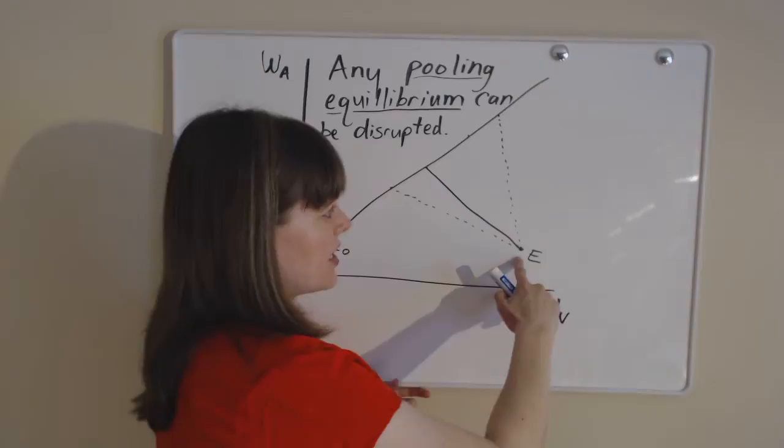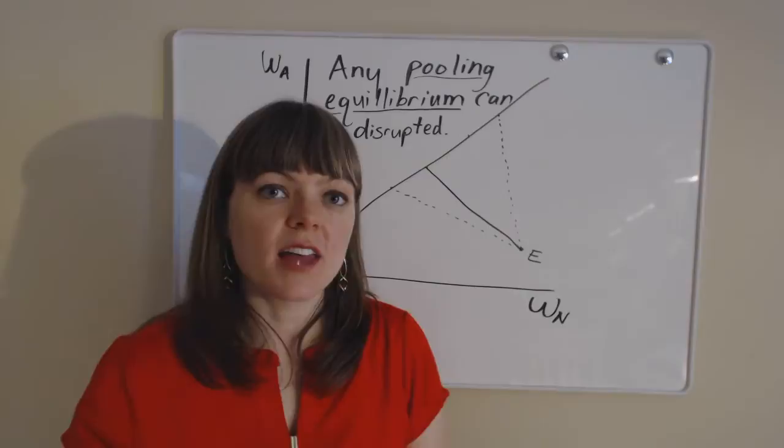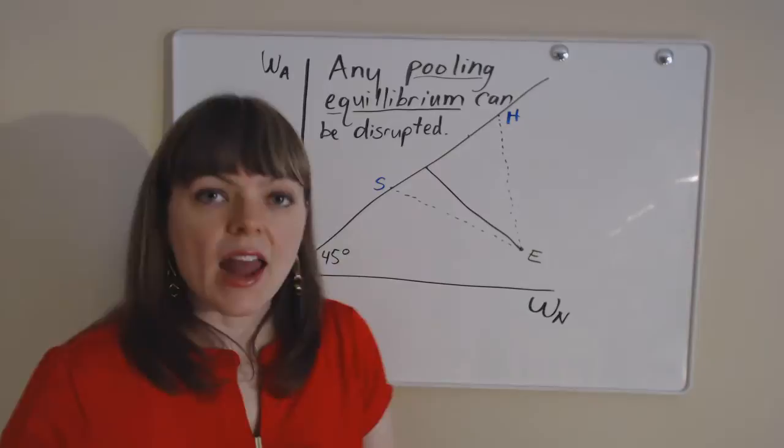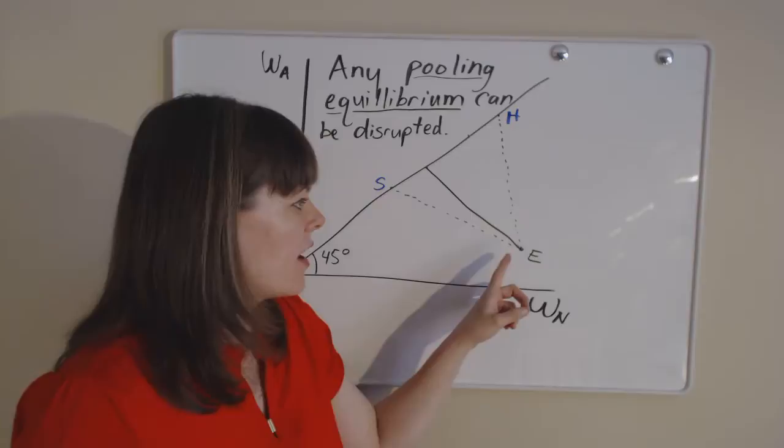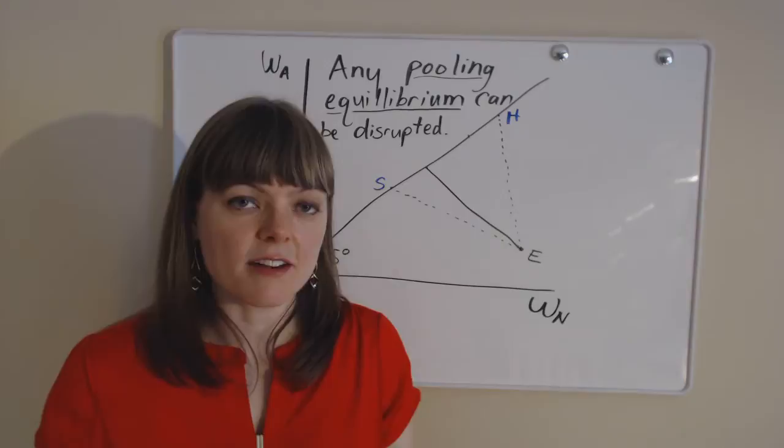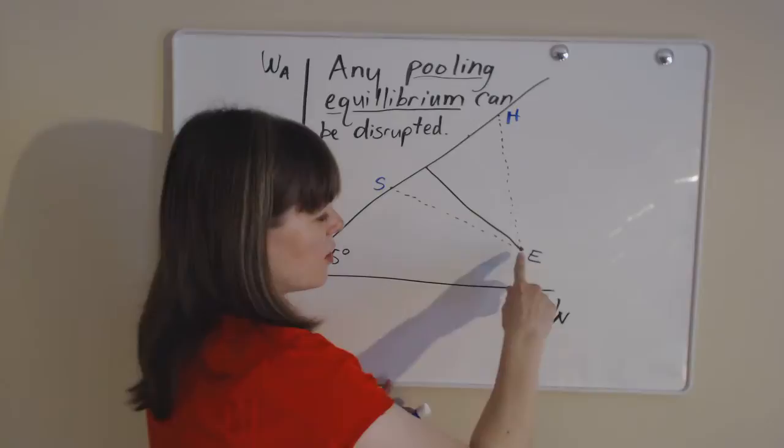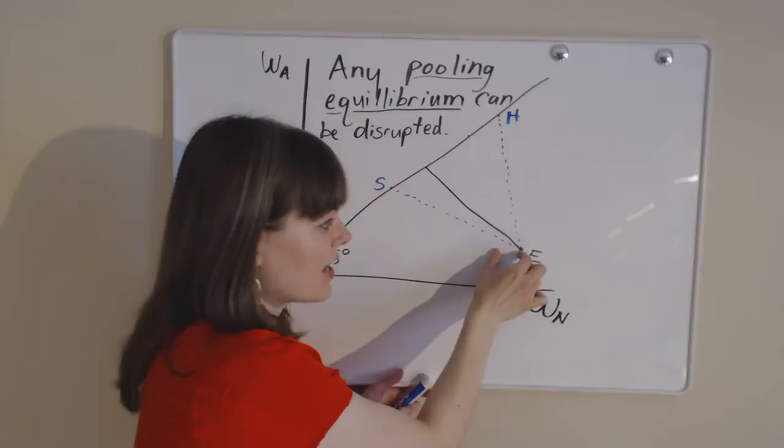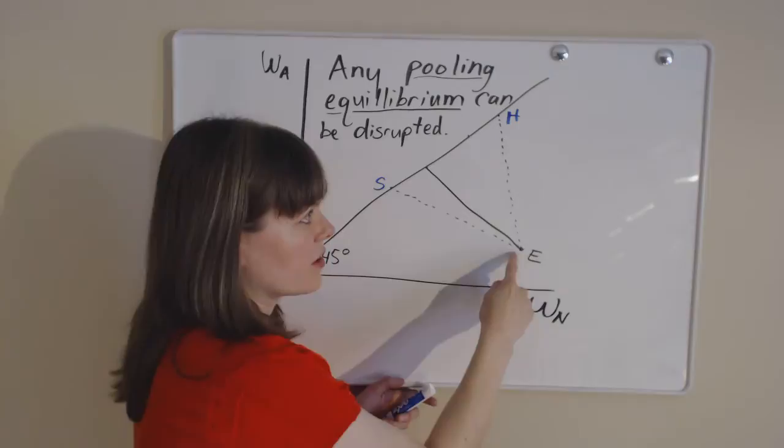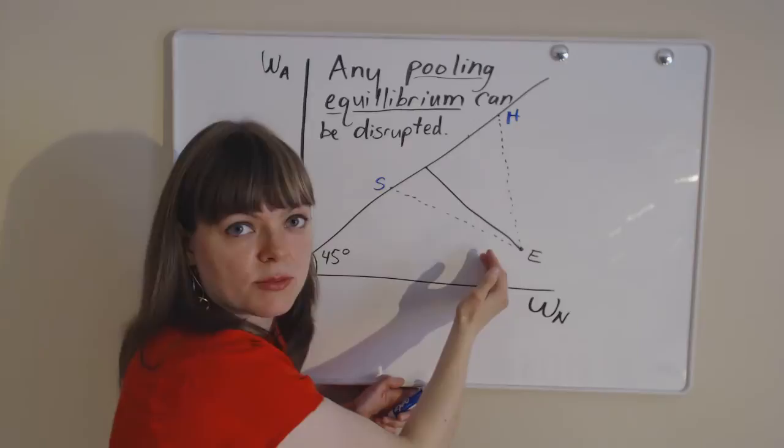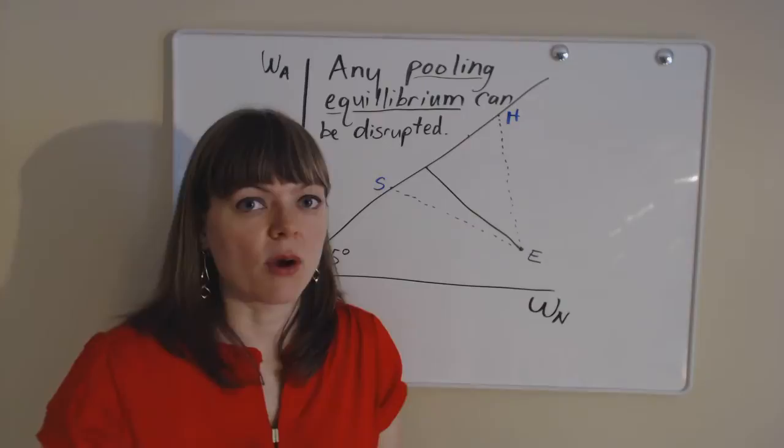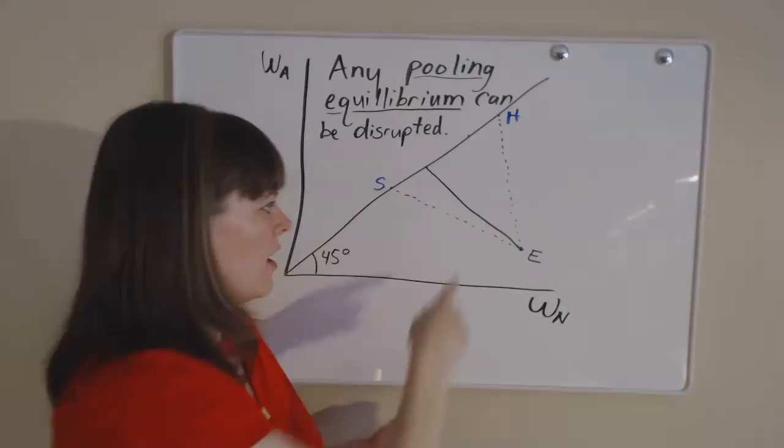The two lines represented here that are dotted represent the actuarially fair line for the healthy and sick individuals. An actuarially fair line represents every possible insurance package in this world that makes the insurance company zero profit. So the amount of money they expect to take in from you based on your premium is exactly equal to the amount of money they expect to pay out given your probability of getting into an accident. The healthy person's line is a lot steeper because there's going to be a lot less money taken out of the person's paycheck every month in the non-accident state of the world.